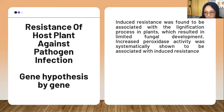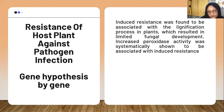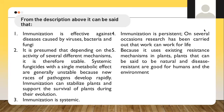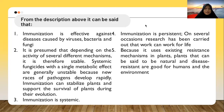Induced resistance was found to be associated with the lignification process in plants, which results in limited fungal development. Increased peroxidase activity was systematically shown to be associated with induced resistance. It can be said that: first, immunization is effective against disease caused by various bacteria and fungi; and second, it is presumed that depending on the activity of several different mechanisms, it is therefore stable. Systemic fungicide with a single metabolic effect are generally unstable because new resistant pathogens develop rapidly.